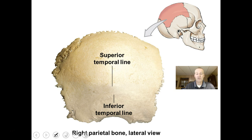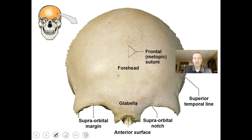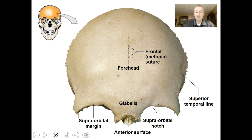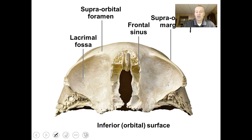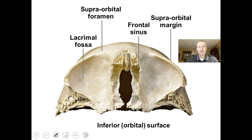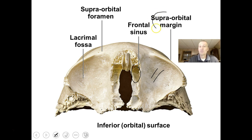The parietal bone has no parts you necessarily need to know besides being familiar with its sutures: the squamosal suture, the coronal suture, and the lambdoid suture. The frontal bone — you would need to know the supraorbital foramen or supraorbital notch, depending on whether you have a hole or a notch there. You can see the orbit and the sinuses inside the frontal bone, but the supraorbital notch or foramen is the key part to know.